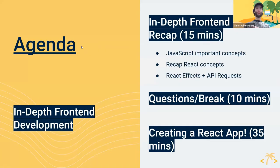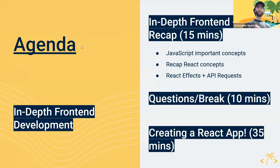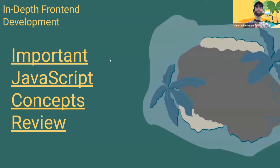So today we're going to be talking about the front end. We're going to be going over some JavaScript concepts that are really important to know when you're developing a React application. We're also going to be recapping some of the React concepts we talked about last time, and we're going to be talking about some new React concepts, including requests and how to make API requests from our front end, so we can grab data and display it in our app. Then we're going to be taking some questions, Kahoot, and finally we're going to be creating another React app.